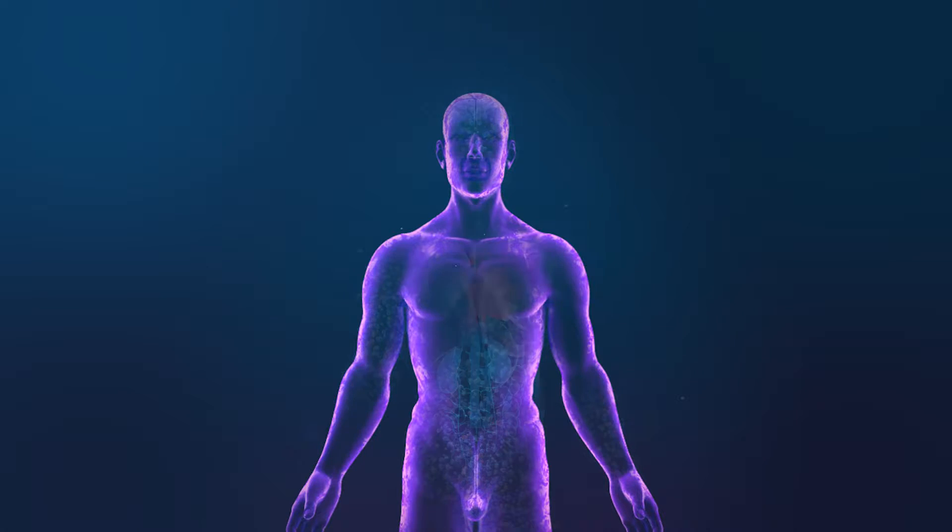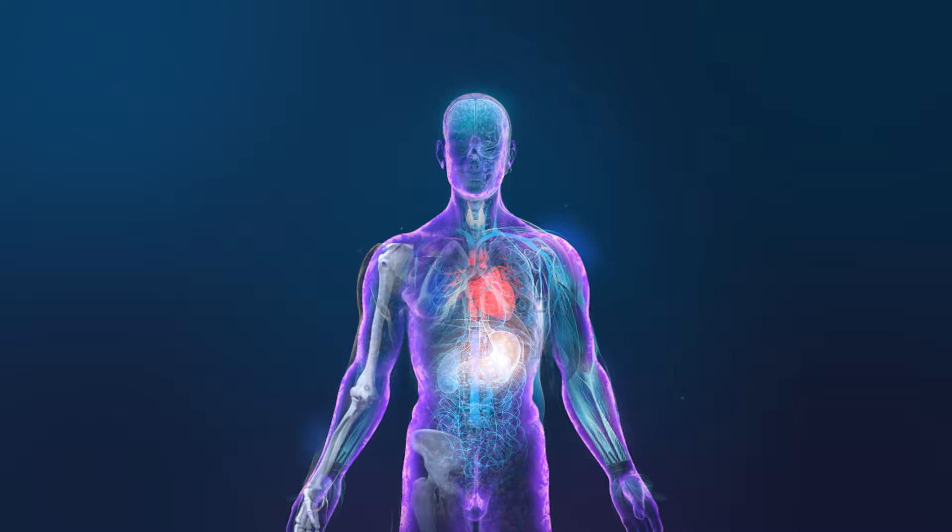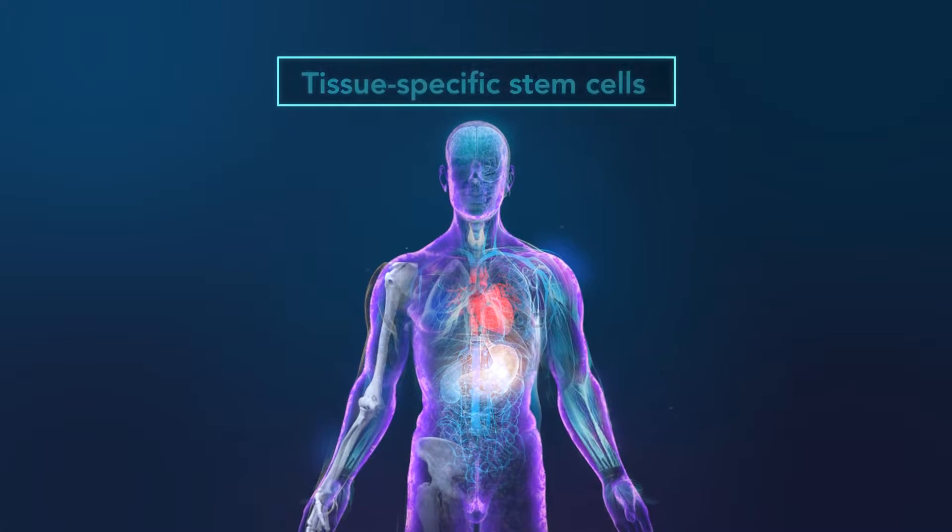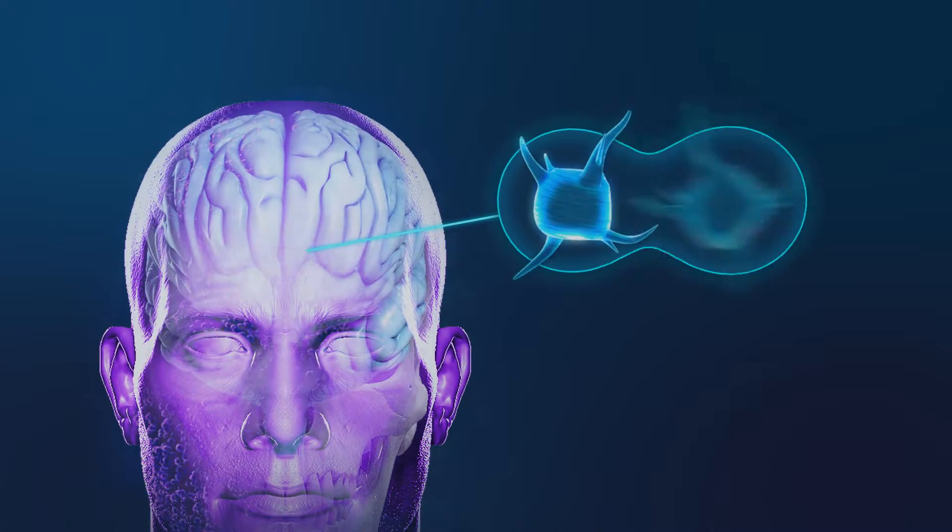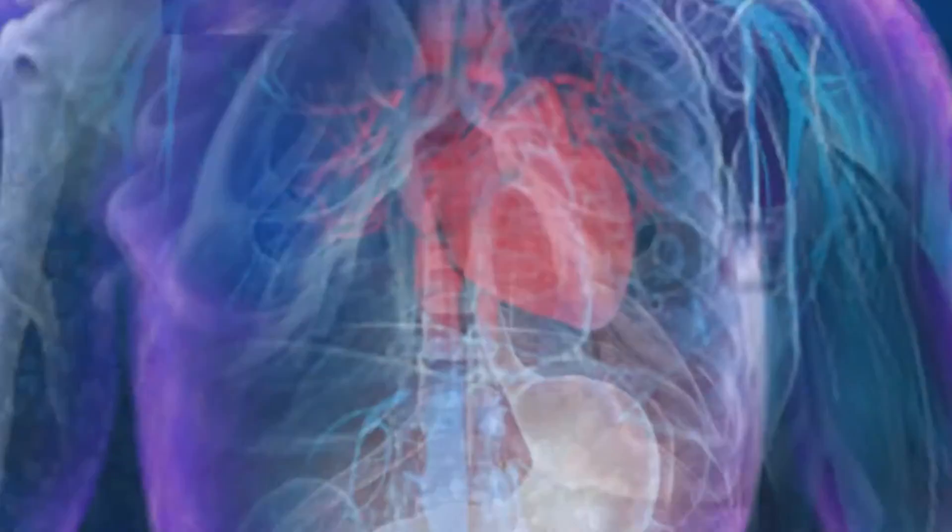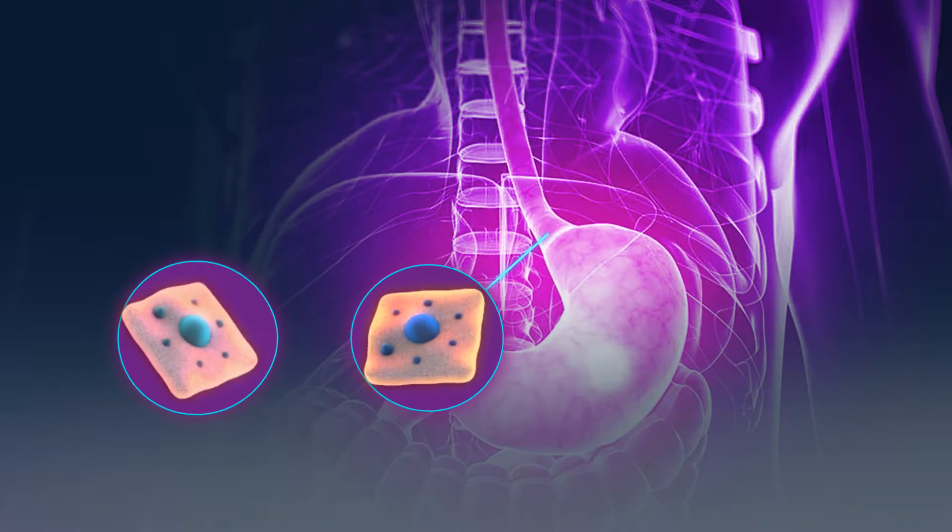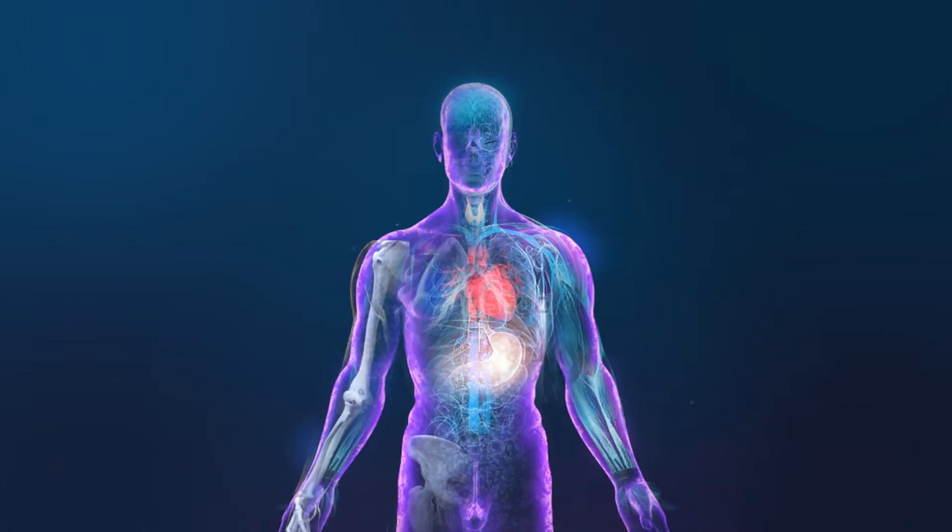They can only contribute to the tissue in which they live. These are tissue-specific stem cells, so stem cells in the brain only produce new brain cells, and those in the gut produce gut cells. Almost all our organs contain a small population of these tissue-specific stem cells.